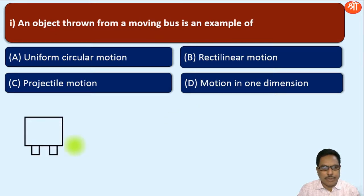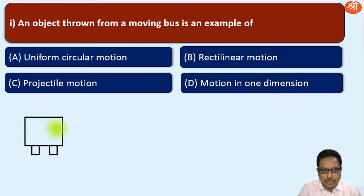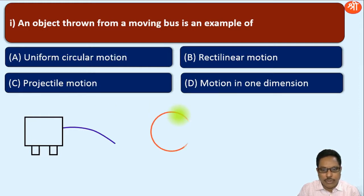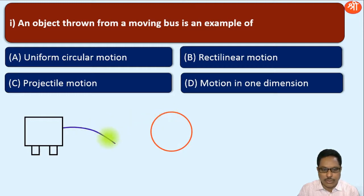Consider this bus which is moving perpendicular to the plane of the figure — you can see this is the back side of the bus. When an object is thrown from this moving bus in this direction, it will move along this curved path and fall on the ground. It is definitely not uniform circular motion, because for UCM the object should move along the circumference of a circle, and here the path is not a circle.